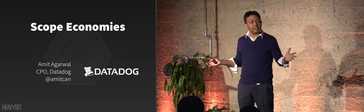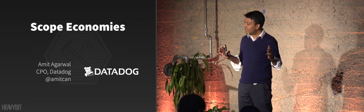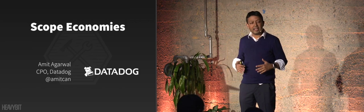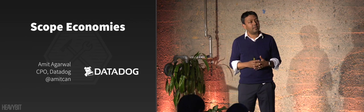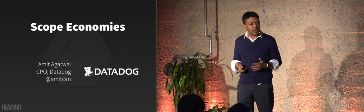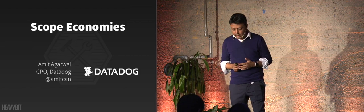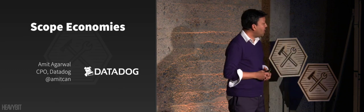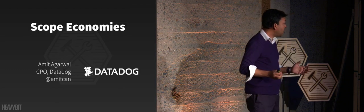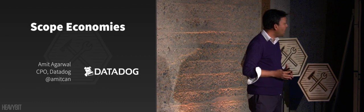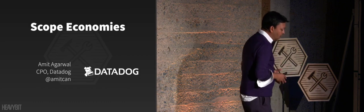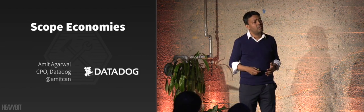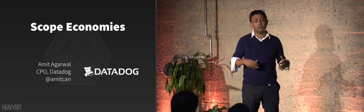Imagine you're running a startup, everything's working well, your product's successful, and you're at that stage where everything's growing and you're scaling and you have to think about what's next. Do we just keep doing what we're doing and keep growing the way we're growing, or do we do something different? I've been with Datadog for about six years and I'm here to share our own experiences and journey in figuring out how we go to the next level of growth.